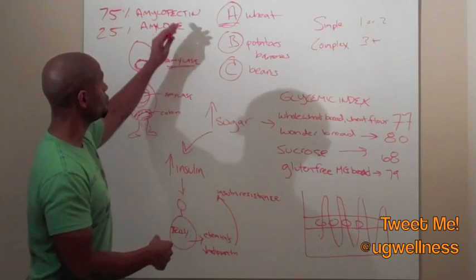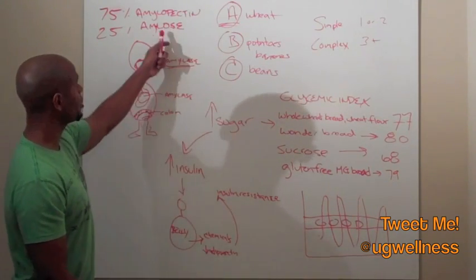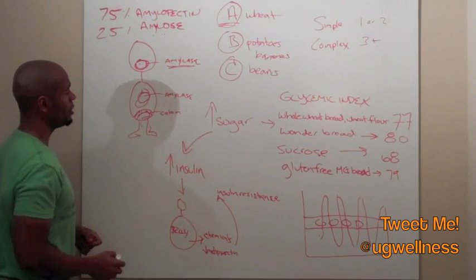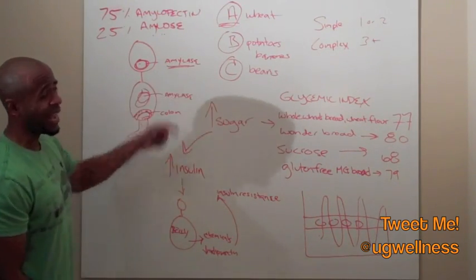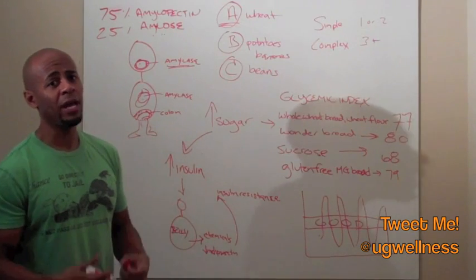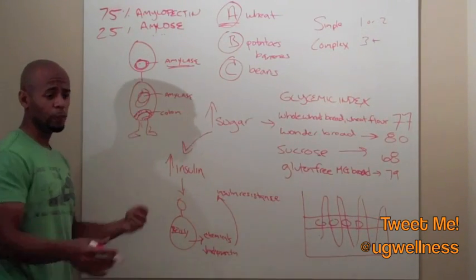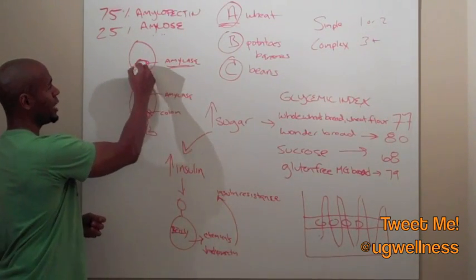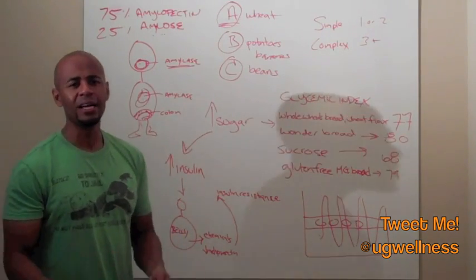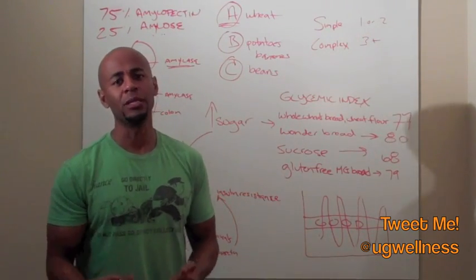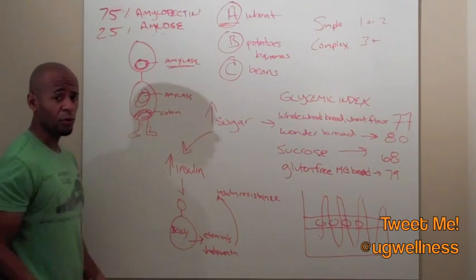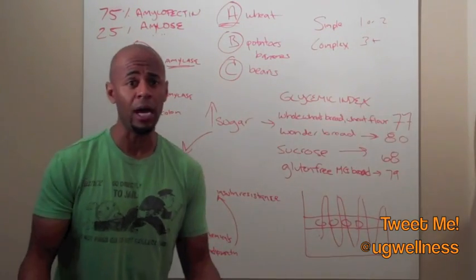So now let's consider how these two things are digested and let's talk about amylose first. Now you have something in your mouth as well as producing your stomach called amylase. So amylase is the enzyme that breaks down amylose. So you consume the wheat, it starts to break down the amylose in the mouth, it breaks it down in the stomach. However, it doesn't do it as efficiently as we'd like it to. So some of that amylose is going to make its way into your colon and of course you're going to go ahead and poop it out.